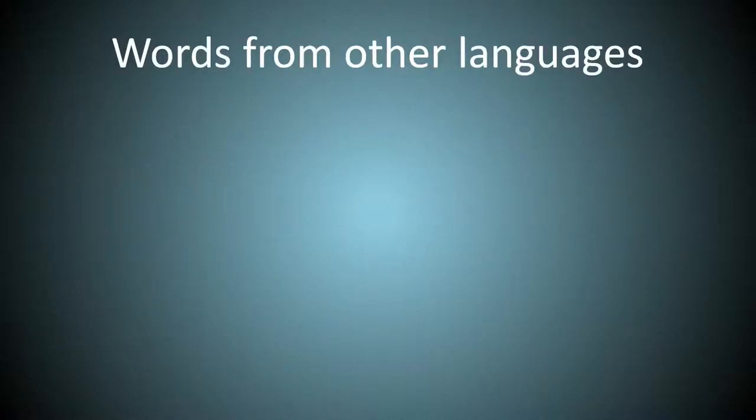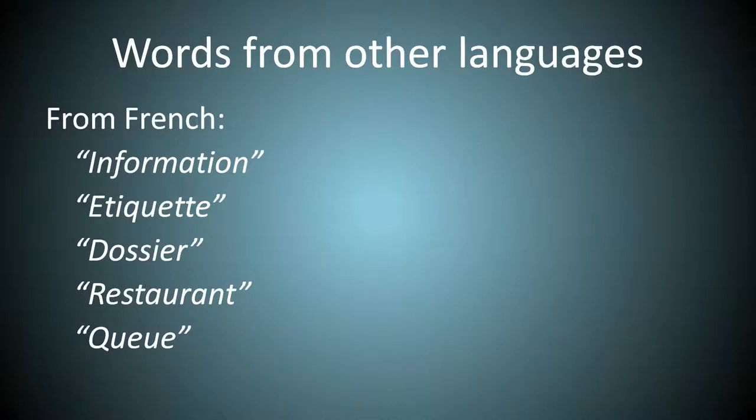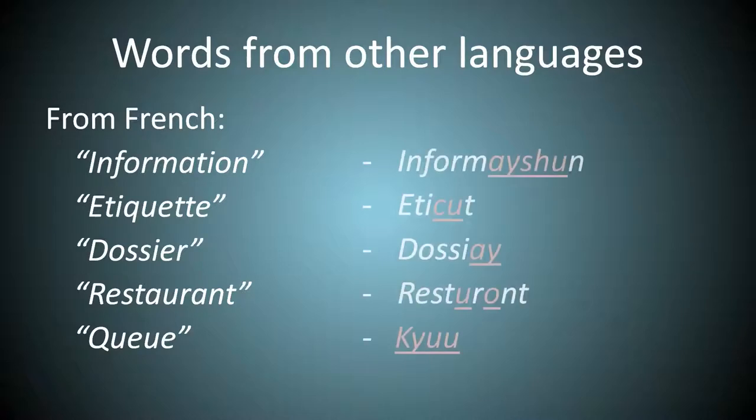Words from other languages. From French we get words like these. Some might argue that, as they come from another language, we shouldn't change them. I disagree with that. And it doesn't really fit the purpose of the video if I don't change them. But, anyway, these words are in the English dictionary. And don't follow the French pronunciation. For example, in French, these are pronounced as information, etiquette, dossier, restaurant, queue. Sorry for the terrible French pronunciation. And some of these words are spelt horribly, like Q. What even is that? Kwewe? So these are changed like so.